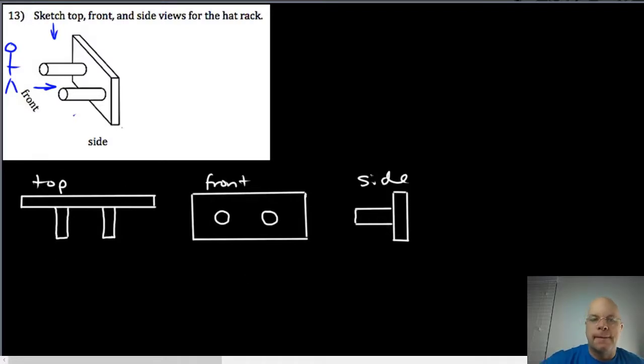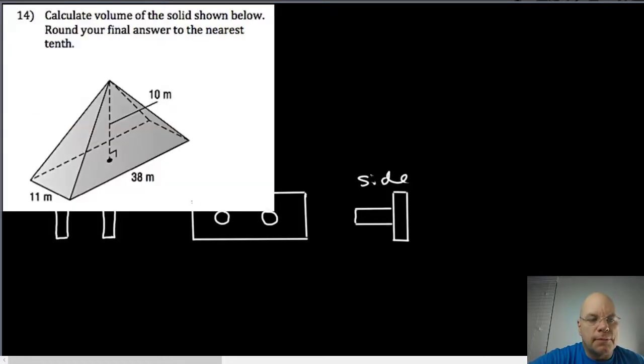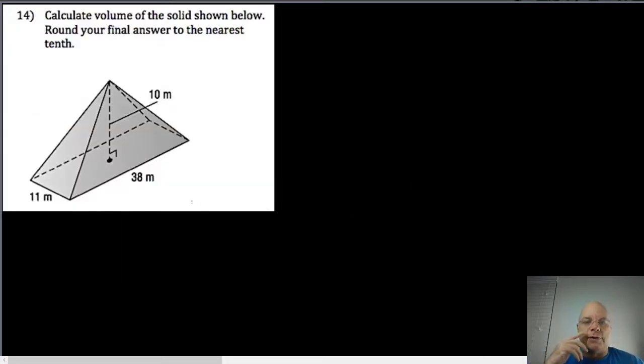Problem 14: we need to calculate the volume of the solid. It has one base—it's a pyramid with a rectangular base. The volume of a pyramid is the same as volume of a prism, except you have a factor of one-third: one-third multiplied by the area of the base multiplied by the height.